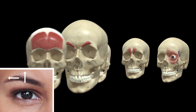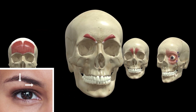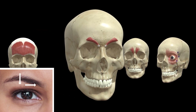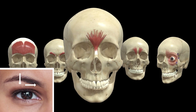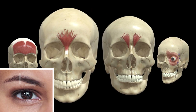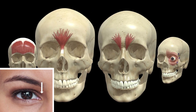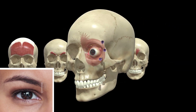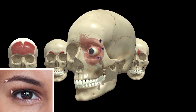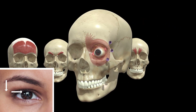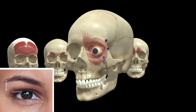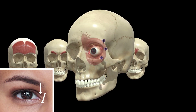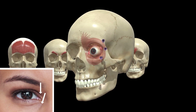The eyebrow is pulled down and medially by the corrugator supercilii and the procerus muscle, and the depressor supercilii pulls the medial head of the eyebrow down. The orbicularis oculi pulls the eyebrow inferiorly and medially, laterally, and infero-laterally. Essentially, the most important component for us to understand is the lateral component.